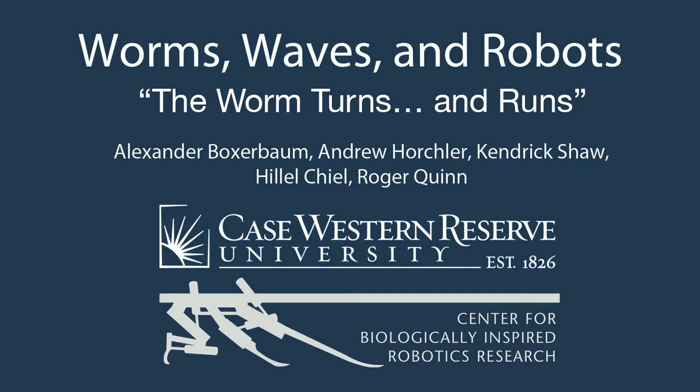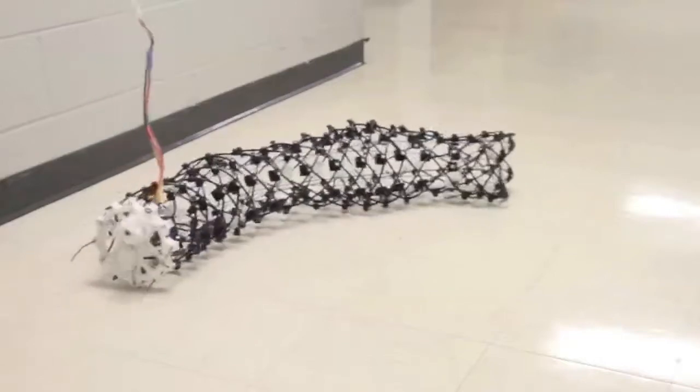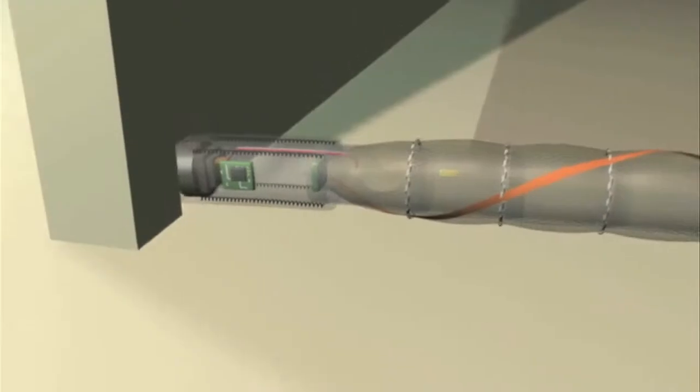The biologically inspired robotics group at Case Western Reserve University has developed several innovative designs for a new kind of robot that uses peristalsis, the method of locomotion used by earthworms.